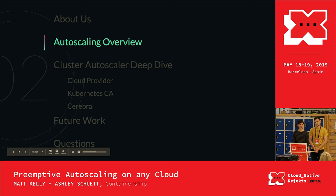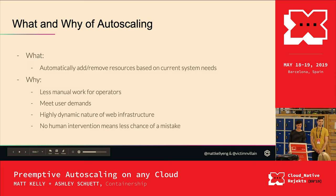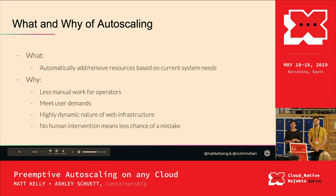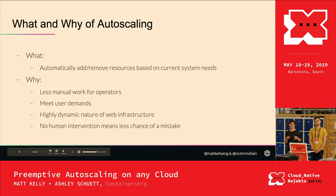First, we're going to talk about the autoscaling overview — what it is and why you would want to use it. Autoscaling is just making your resources meet the demands. There are different types: scaling up or down pods, or scaling up and down nodes — it's making sure resources meet the demands of your current system.